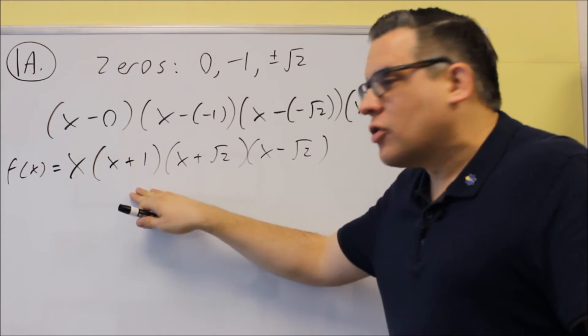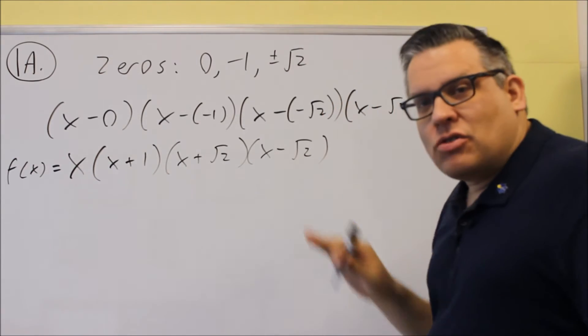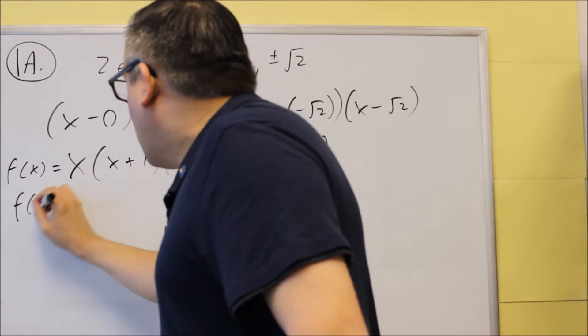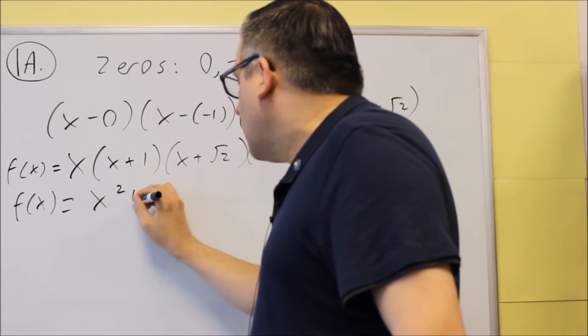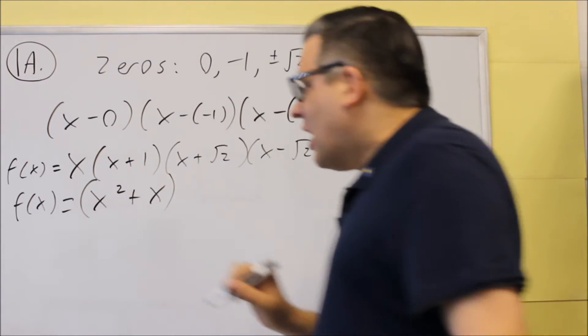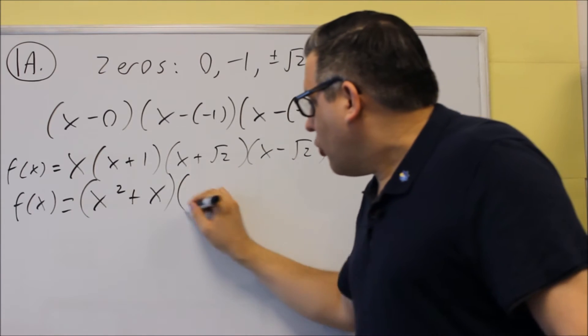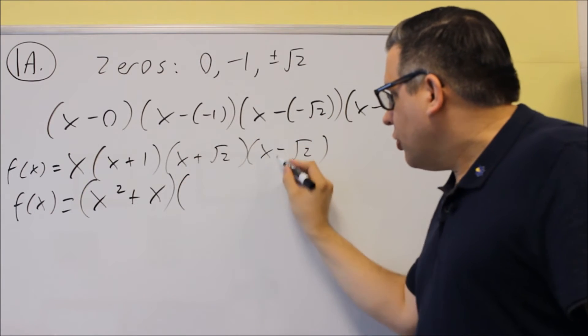So what I'll do is I'm going to multiply the first 2 together, and the second 2 together, and then finally I'll combine all that together. So we have f of x, and this first one, we'll get x squared plus x if we multiply the first 2 together. For this one, we do foiling, so we'll get x squared.